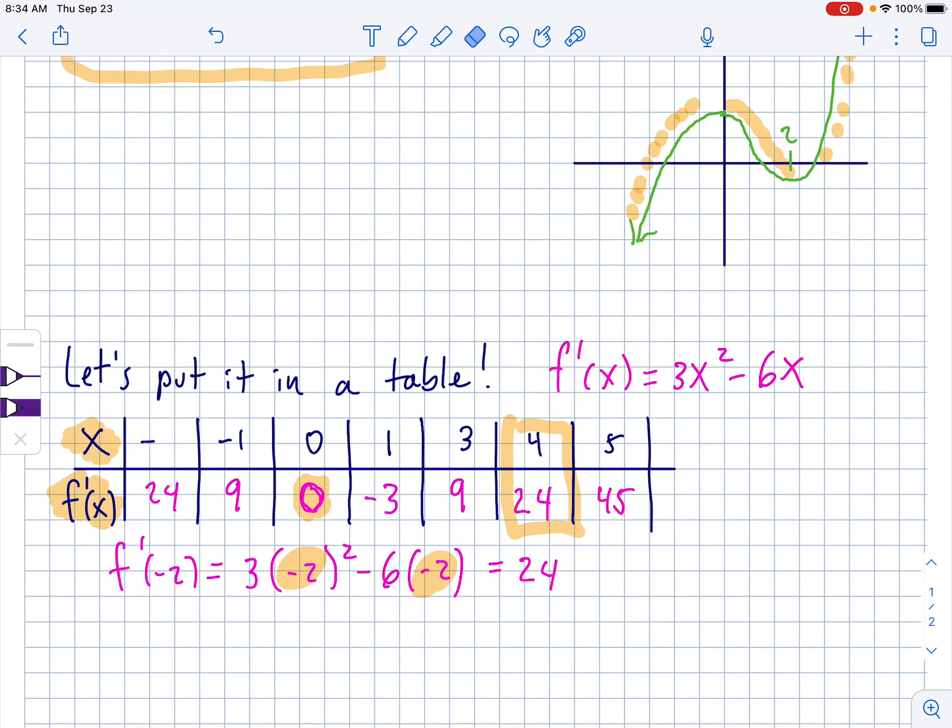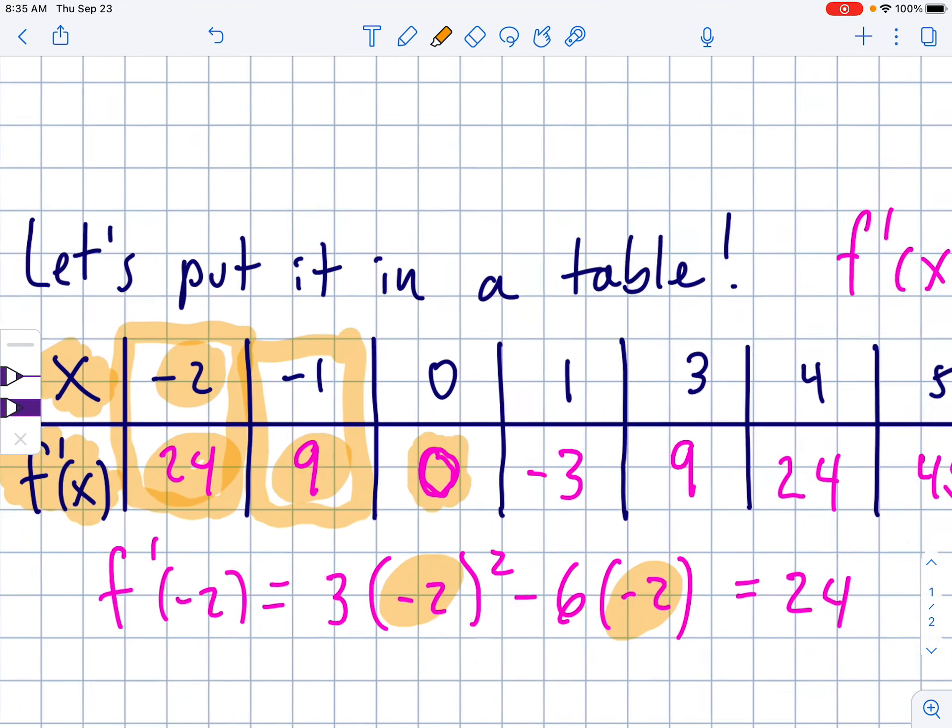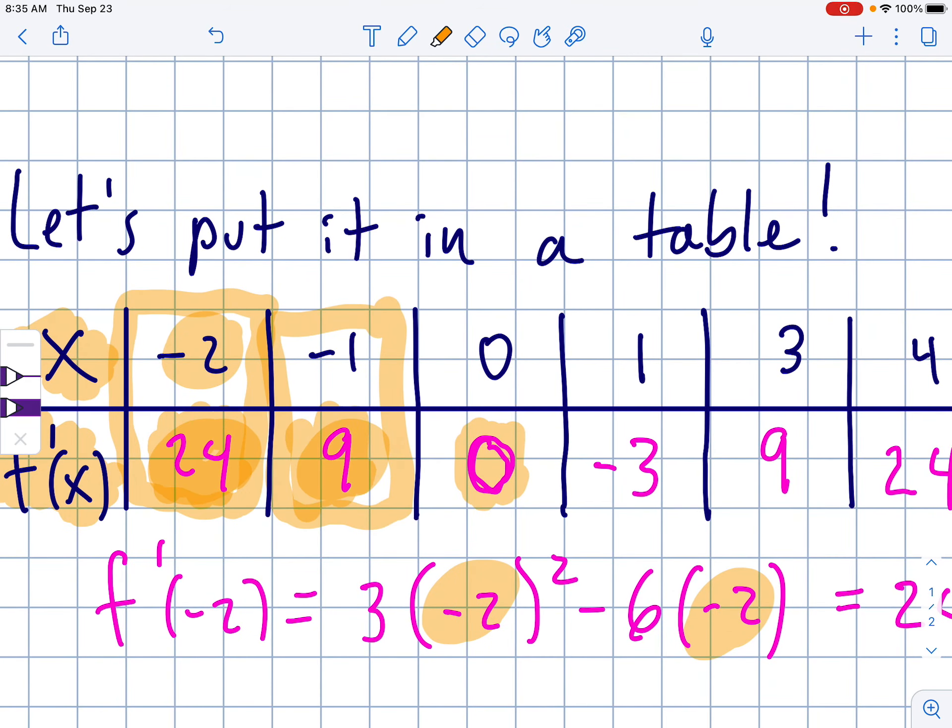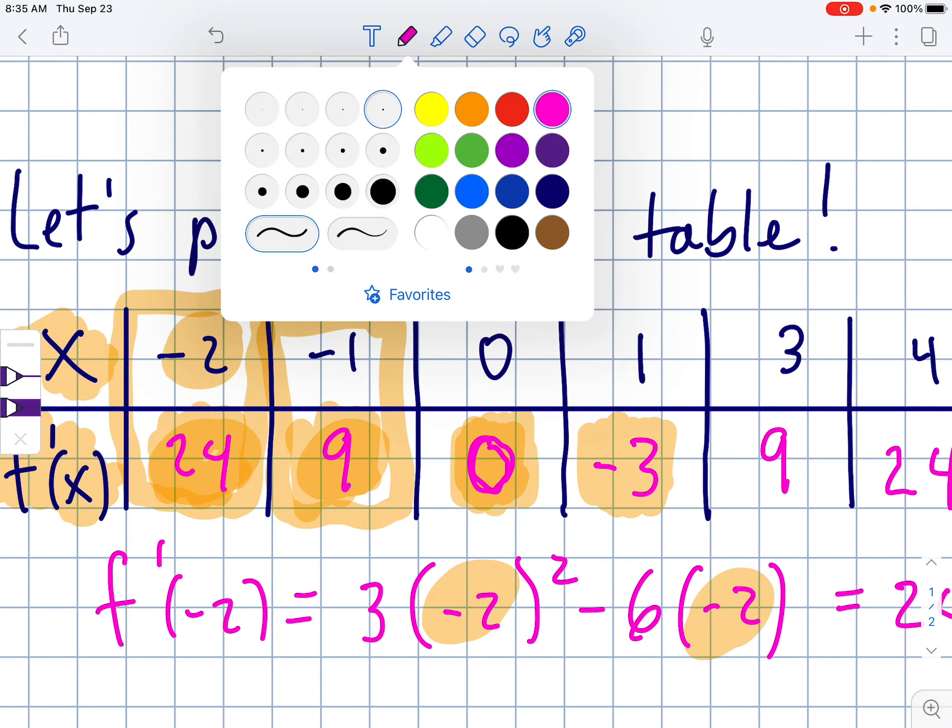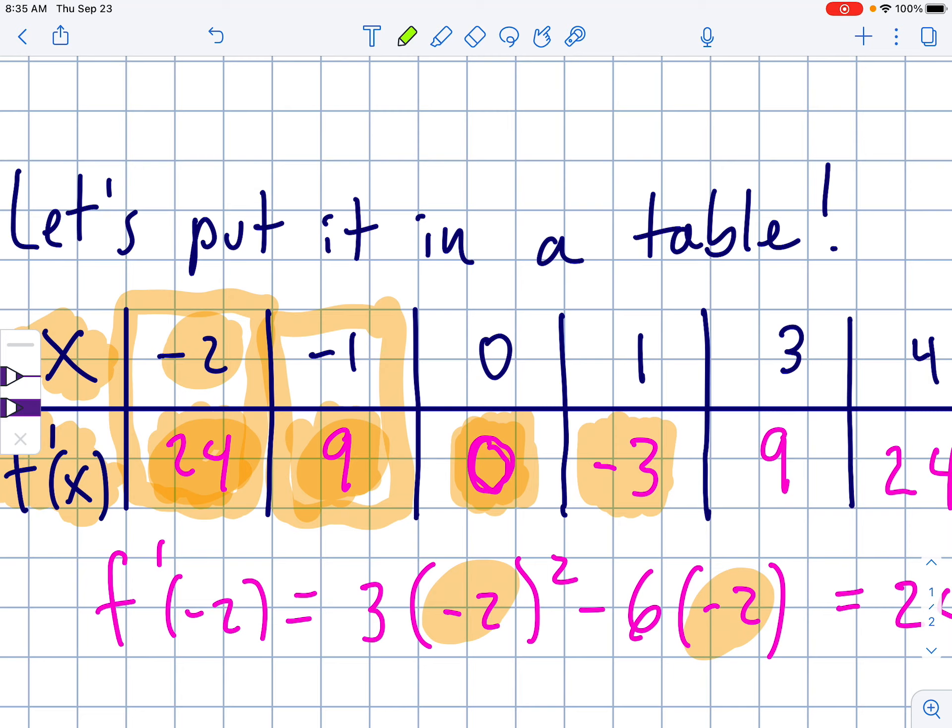Now, remember what these pink values actually are. These are the slopes. Remember, we're plugging them into the derivatives. So these are slopes because we put them in a slope machine. Now, at negative 2, this means that there's a slope of a tangent that's 24. That is a very steep uphill slope. And then at negative 1, it's still going uphill because these two numbers are positive. Then it turns around at 0. There's a horizontal tangent.